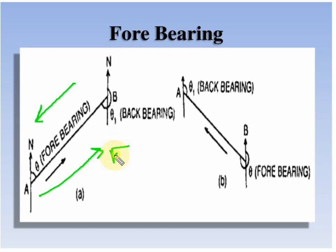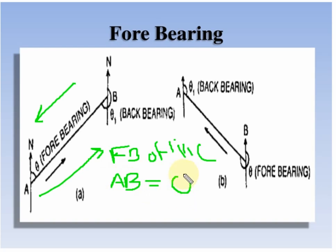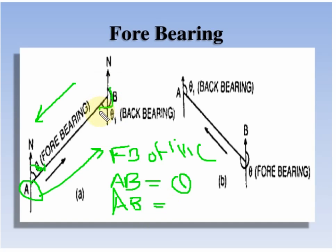The fore bearing of line AB is theta, which is measured from station A. The back bearing of the same line AB — do not write BA — is theta 1. Remember: fore bearing is measured from station A, and back bearing is measured from station B.